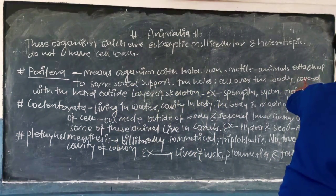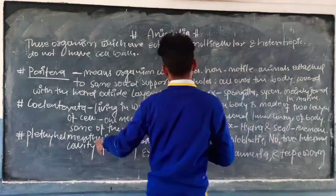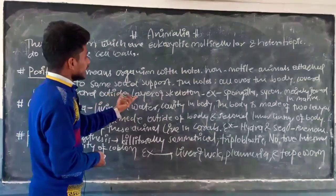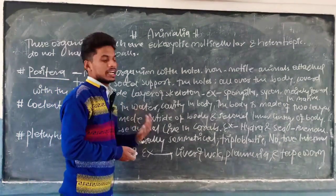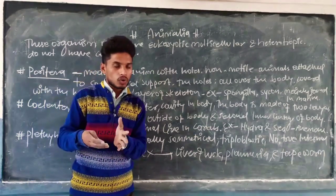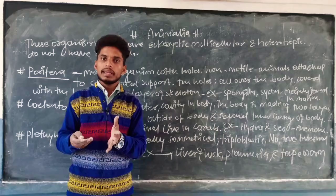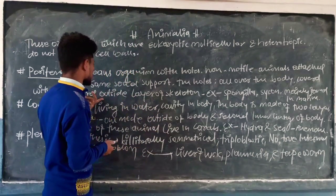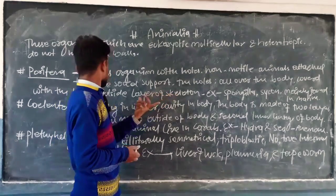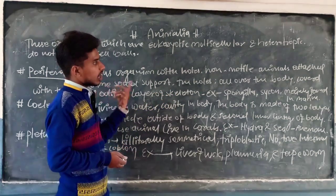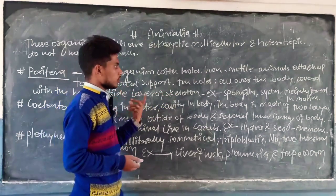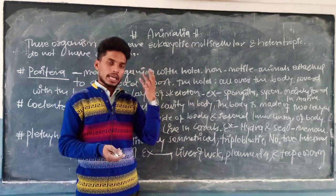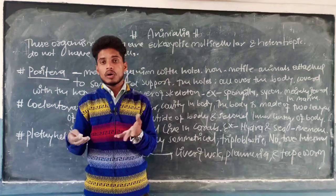Porifera have holes all over the body. Along with that, they have a hard outside layer — an outer skeleton. The outer skeleton layer is present with a hard skeleton. So in the example of Porifera, what do we see? A spongy body with holes all over the body — holes are present right.